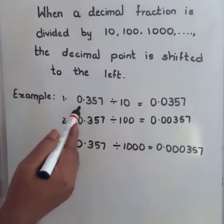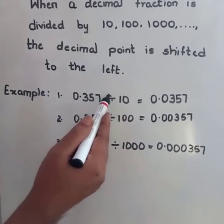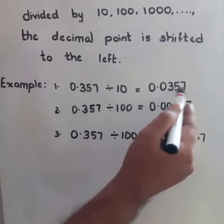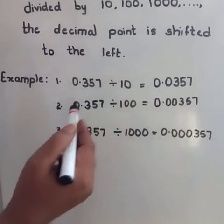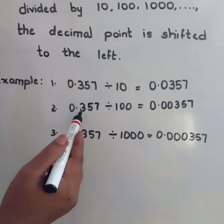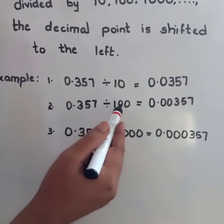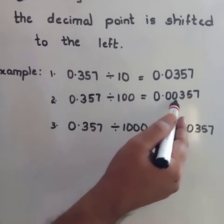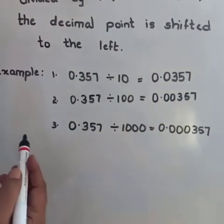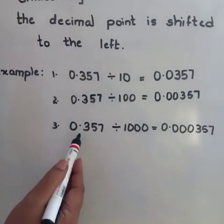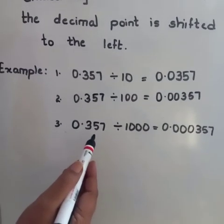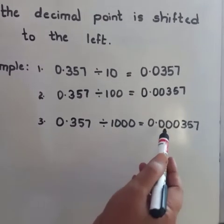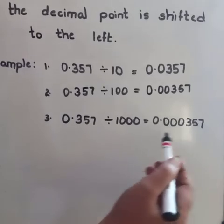We will see some examples. For 0.357 ÷ 10, the decimal moves one place to the left — one zero is added before the digit. For 0.357 ÷ 100, two zeros come before the 3, so it moves two places left. For 0.357 ÷ 1000, three zeros come up, giving 0.000357.